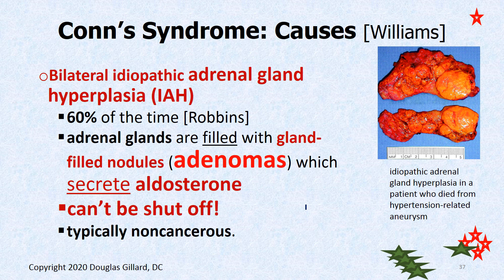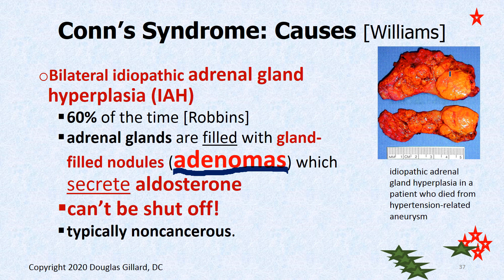What's the cause of Conn syndrome? The number one cause — about 60% of the time according to Robbins — is idiopathic adrenal gland hyperplasia (IAH). Basically, non-cancerous glandular tumors have grown; you can see all these glands under the microscope. They collectively present as large masses filled with glomerulosa cells that have no control — they're just cranking out aldosterone and can't be shut off. These are filled with adenomas of granulosa cells that usually are not cancerous, though occasionally they can be.